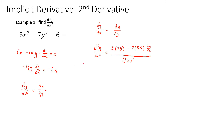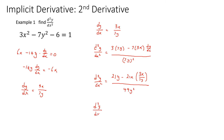Now we substitute dy/dx, which we know to be 3x over 7y. So the second derivative equals 21y minus 21x times (3x over 7y), all over 49y squared. Simplifying, we get 21y minus 9x squared over y, all over 49y squared.